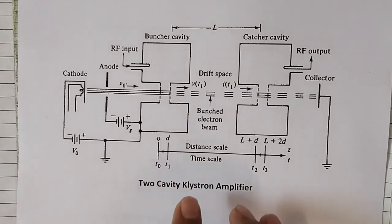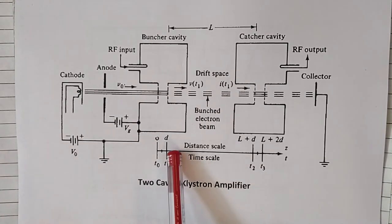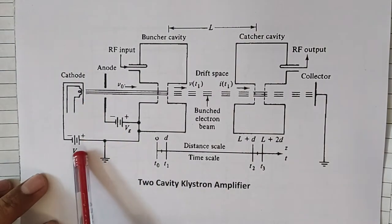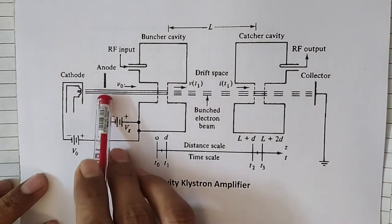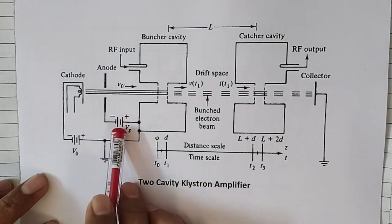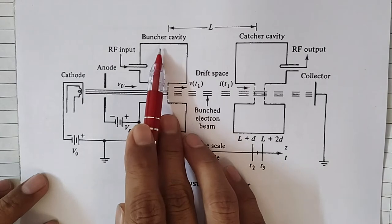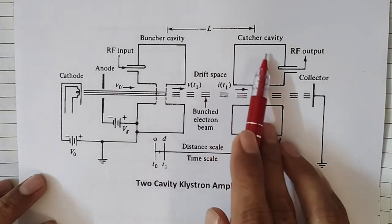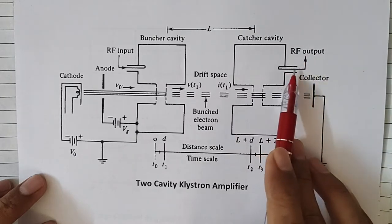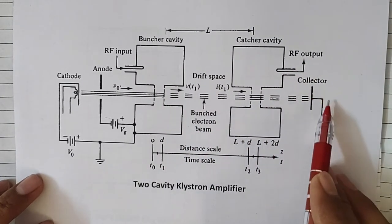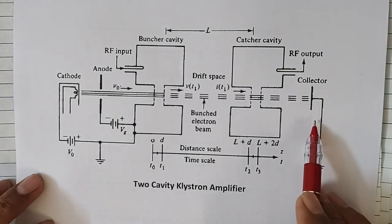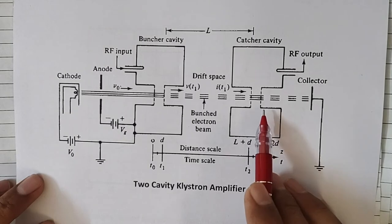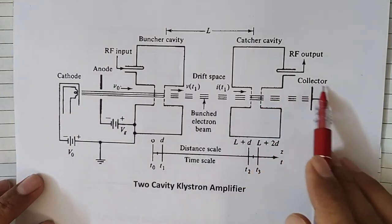Regarding constructional details, this tube has got two cavities, hence the name two-cavity klystron amplifier. It has a cathode with supply voltage V₀, then an anode used for focusing purpose. The RF signal input is given to the buncher cavity, the second is a catcher cavity from which RF signal output is taken, and then the collector — the job of the collector is to collect the electrons after they have given up their kinetic energy in the form of electromagnetic energy.